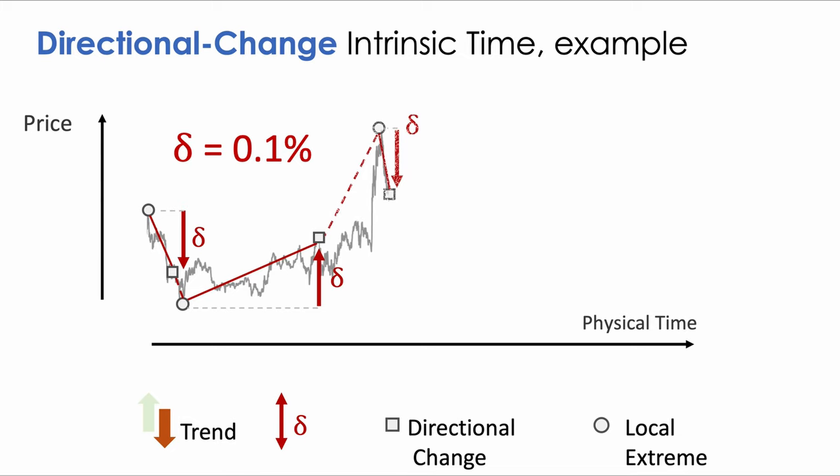As soon as the price has moved down by 0.1% from the recent maximum, a new trend down has established itself. We can use for our operator any threshold, be it 0.1%, 1%, or any other value. The different thresholds are equivalent to sampling data at 10 minutes, 1 hour, or any other interval.